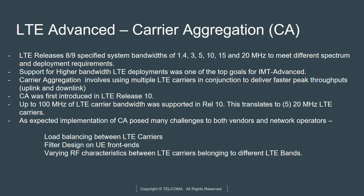There were challenges depending on how far those different carriers are apart in the frequency domain, because filter design is very crucial for good UE performance. There was also a challenge around varying RF characteristics between LTE carriers belonging to different LTE bands. There are a variety of LTE bands defined in 3GPP that fall in different frequency ranges — low or high frequency. Typically, low frequency carriers propagate much further, whereas high frequency carriers experience more multipath. So there are challenges associated with combining frequency carriers across multiple bands.